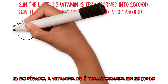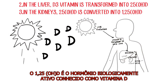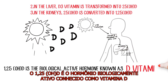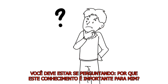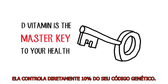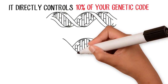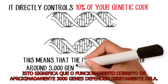Two: in the liver, D3 vitamin is transformed into 25-OHD. 25-OHD is the biologically active hormone known as Vitamin D. You must be asking yourself: why is that important to me? Vitamin D is the master key to your health — it directly controls 10 percent of your genetic code, meaning the correct functioning of around 3,000 genes depends directly on it.